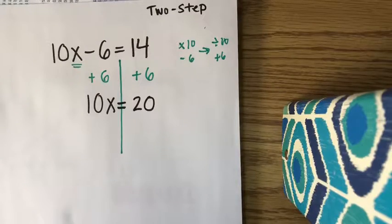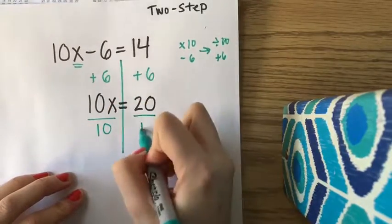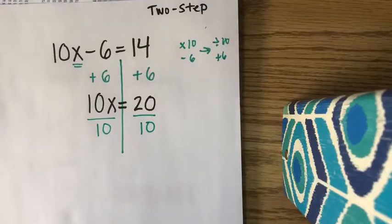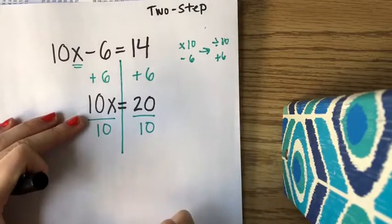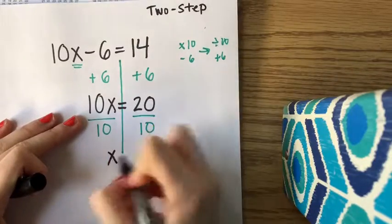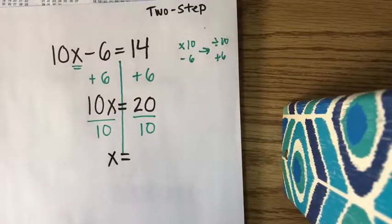The next thing that I said I would do is divide by 10. So I'm going to take both sides of my equation and divide by 10. When I've done that, on the left-hand side, I'm just left with x. 10x divided by 10 is just 1x. And on the other side of the equation, 20 divided by 10 is 2.